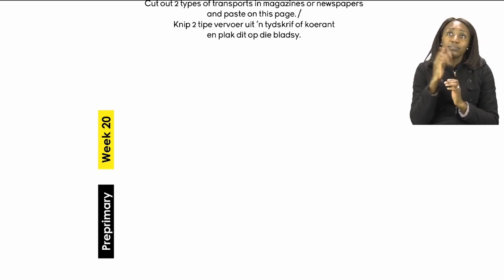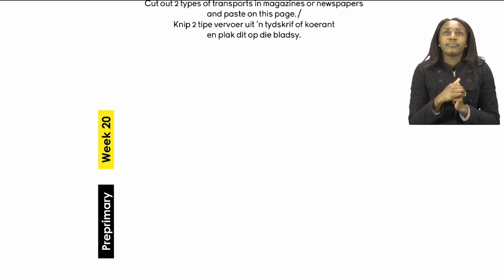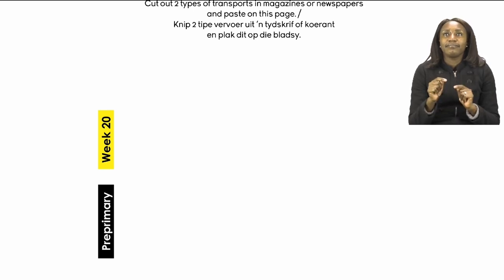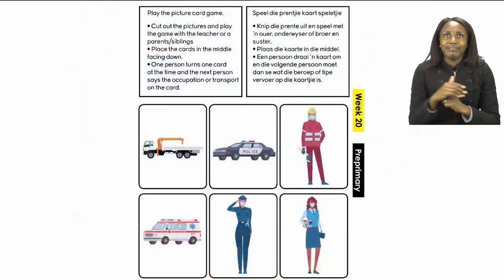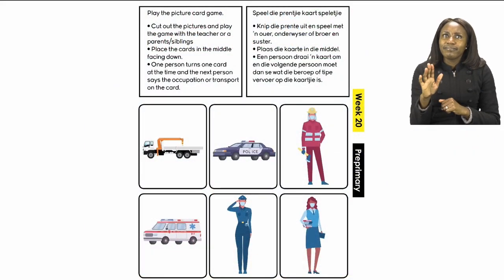The next thing you're going to do after cutting your two types of transport is go to the next page — page 25. On page 25 we're going to play a game.